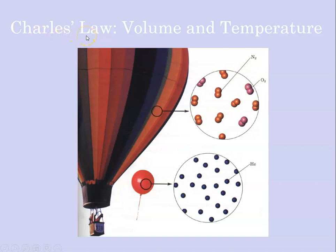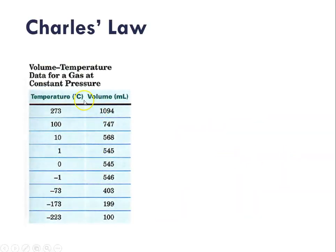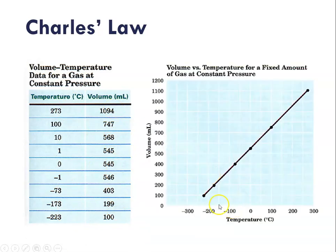So here are some measurements. As temperature increases, the volume increases. So as the temperature goes from -200 to 270, the volume goes from 100 milliliters to almost 1100 milliliters. So as the temperature goes up the volume goes up, so that is a direct linear relationship.